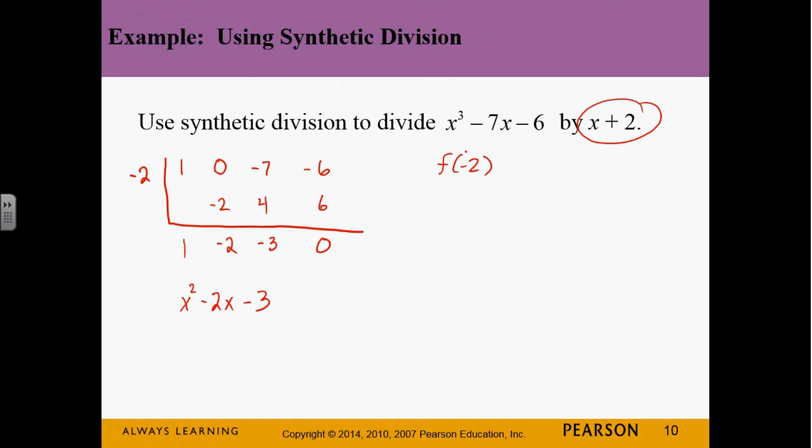We can test this. What's negative 2 cubed? Negative 8. What's negative 7 times negative 2? Positive 14 minus 6. What's negative 8 plus 14 minus 6? Zero. And that's what the remainder theorem is.